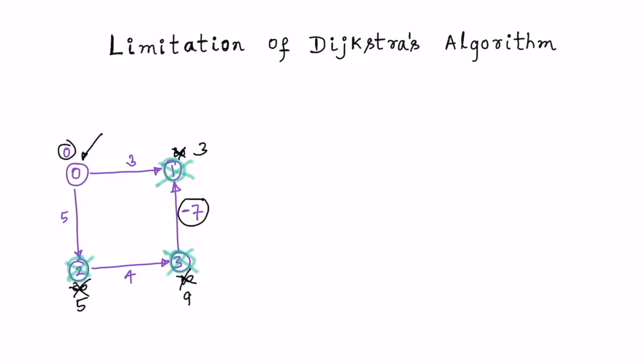Next we are supposed to check neighbors of node 3, which is node 1, but we have already marked node 1 as visited, so we stop execution here. However, in this graph the shortest path from node 0 to node 1 follows the path 0 → 2 → 3 → 1, and the distance is 5 plus 4 minus 7, which is 2 — smaller than 3. Dijkstra's algorithm failed to find the shortest path. Whenever there's a negative edge, Dijkstra's algorithm may or may not find the shortest path to all the nodes.